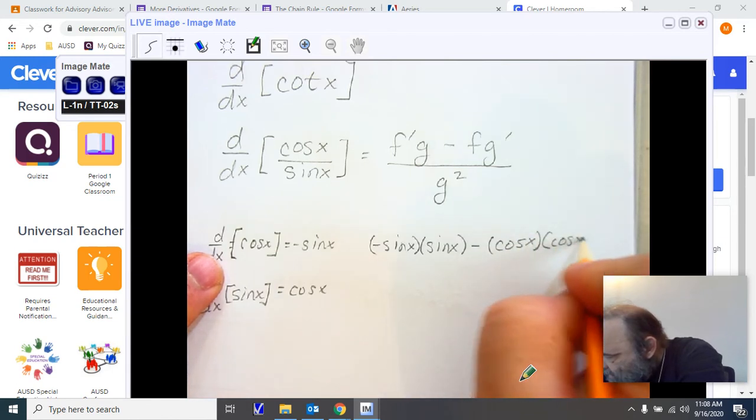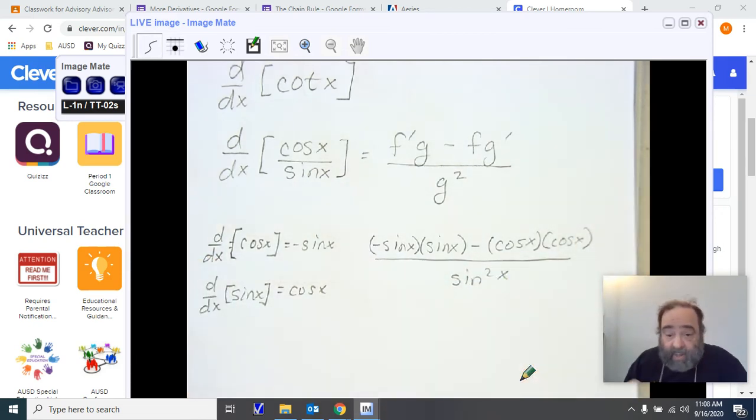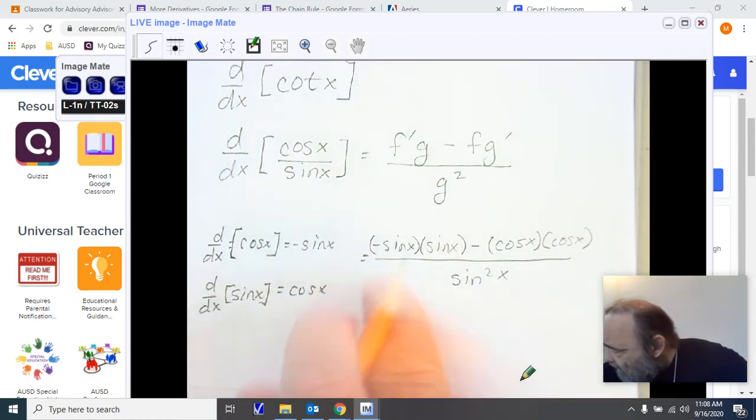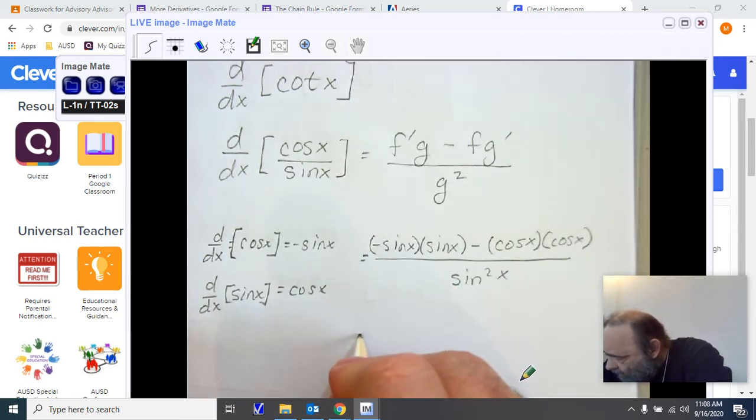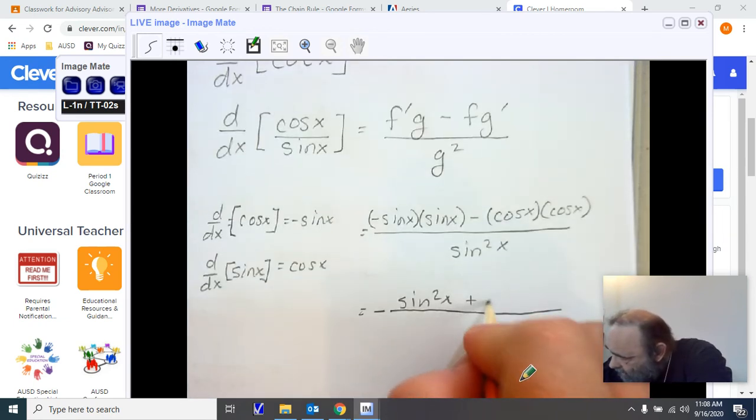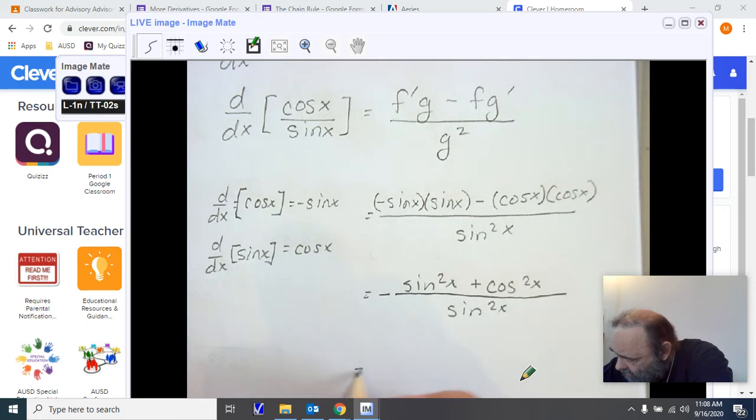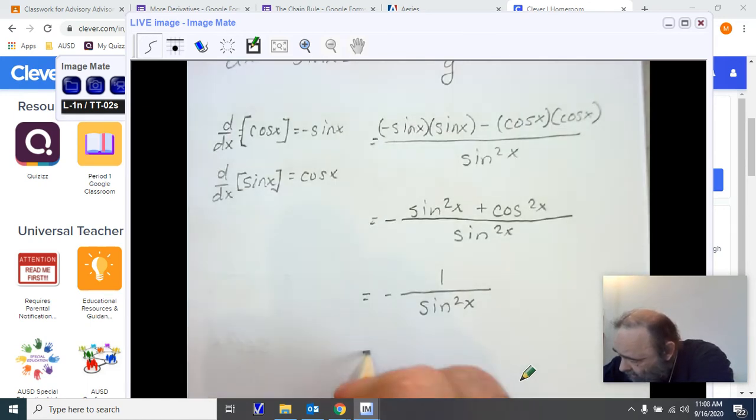Well, these have a negative in common. So I'm going to factor that negative out and rewrite it as the sine squared x plus cosine squared x over sine squared x. Once again, our Pythagorean identity allows us to substitute and change it into 1 over sine squared x. And we know this to be the negative cosecant squared x.